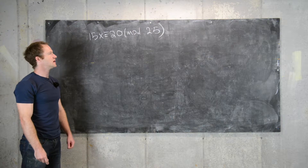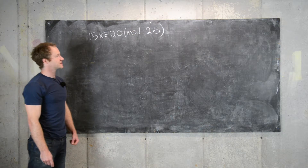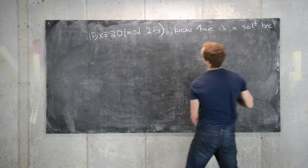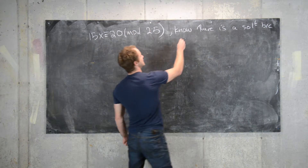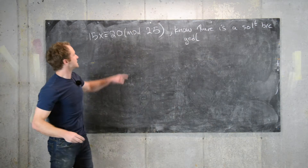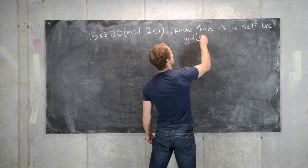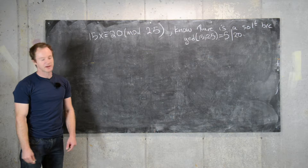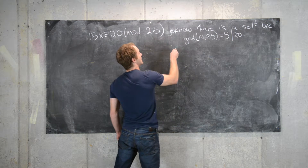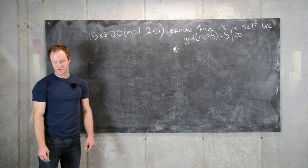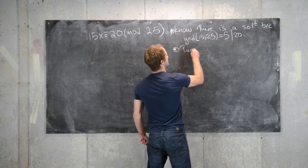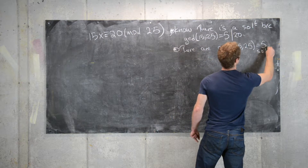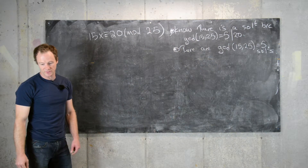Consider 15x ≡ 20 mod 25. We know that there's a solution because the GCD of 15 and 25 equals 5, which divides 20. Because of that we know there's a solution. Furthermore, we know there are GCD(15, 25) = 5 solutions by the proposition we just proved.